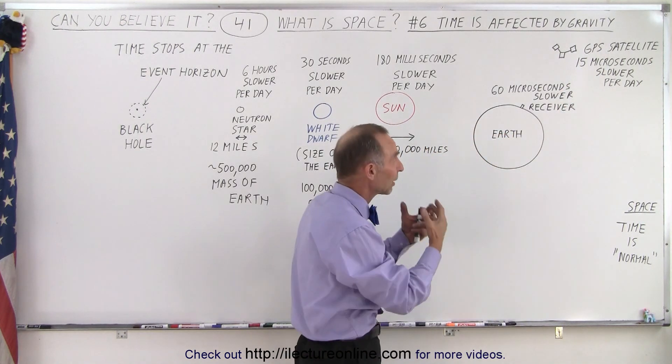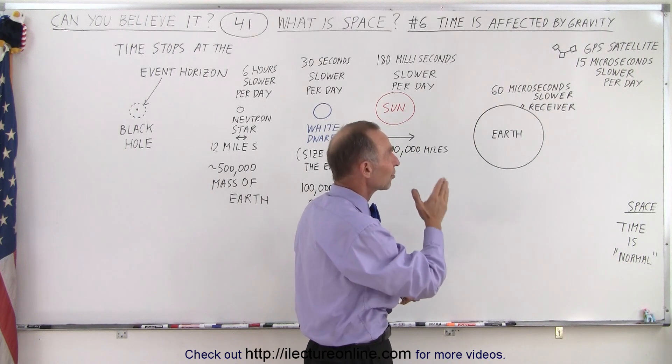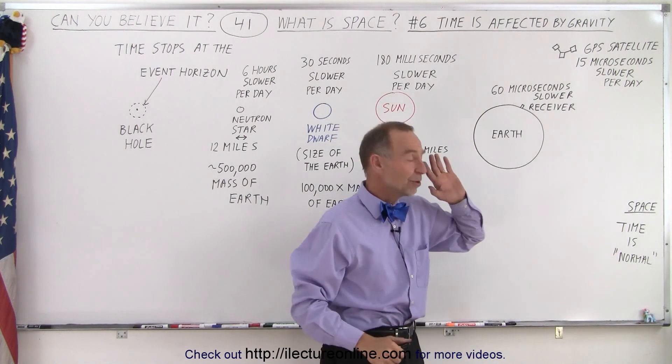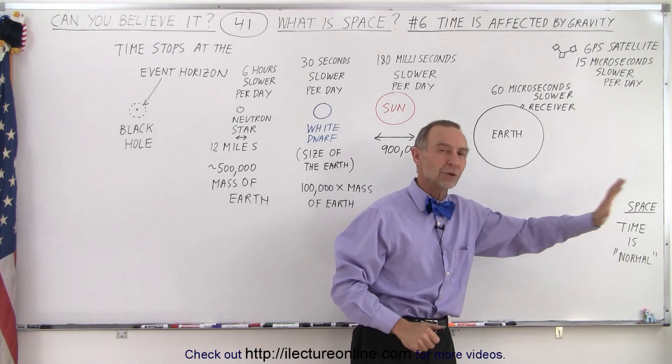They're made out of atomic clocks, but they run about 15 microseconds slower per day than they would if the GPS satellite was far away from the Earth in space.